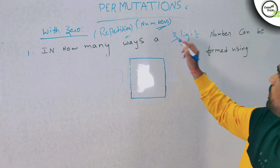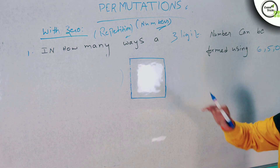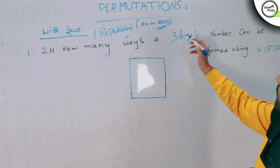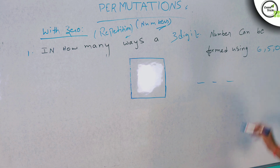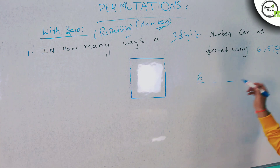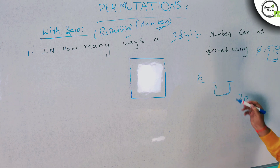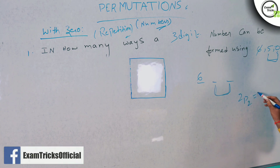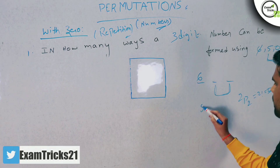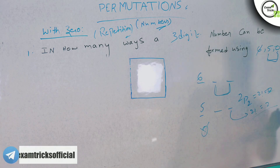Next question: in how many ways can a 3-digit number be formed using 6, 5, 0? We have a 3-digit number with 3 places. If 0 occupies the first place, we leave it out of position 1, so positions 2 and 3 are filled by the remaining 2 digits — 6 and 5. That gives 2P2 equals 2 factorial equals 2 ways. The first place can be filled by 6 or 5 in 2 ways. So total is 2 times 2 equals 4.